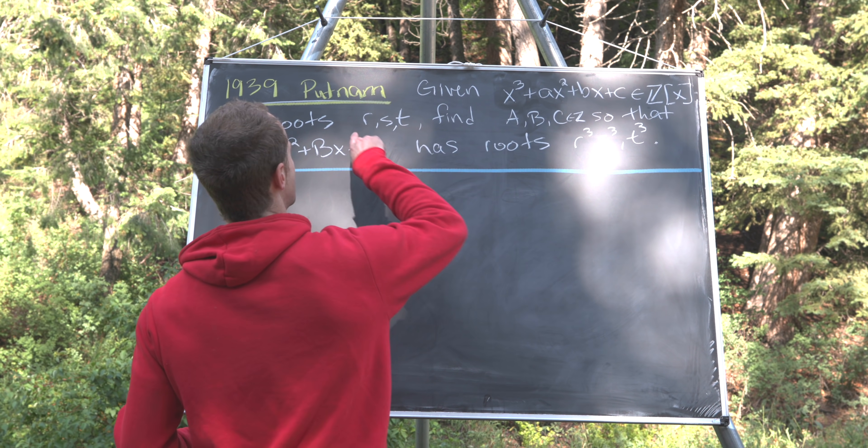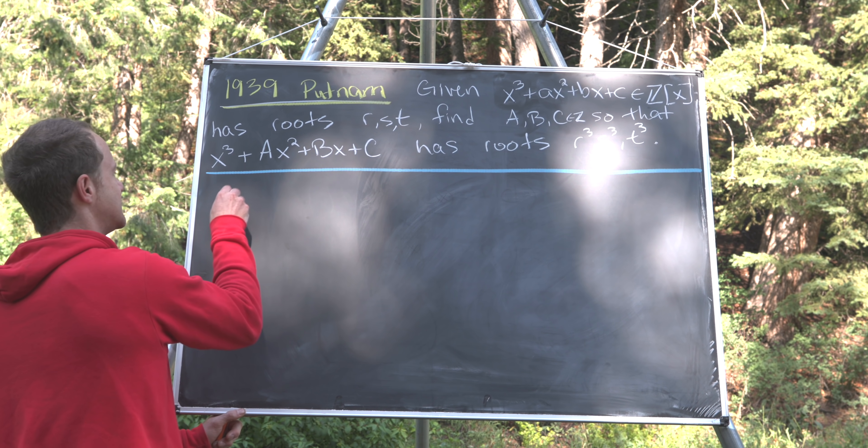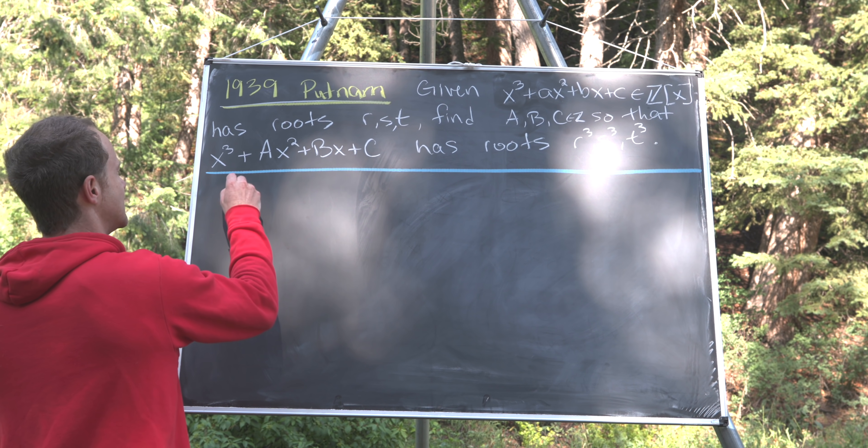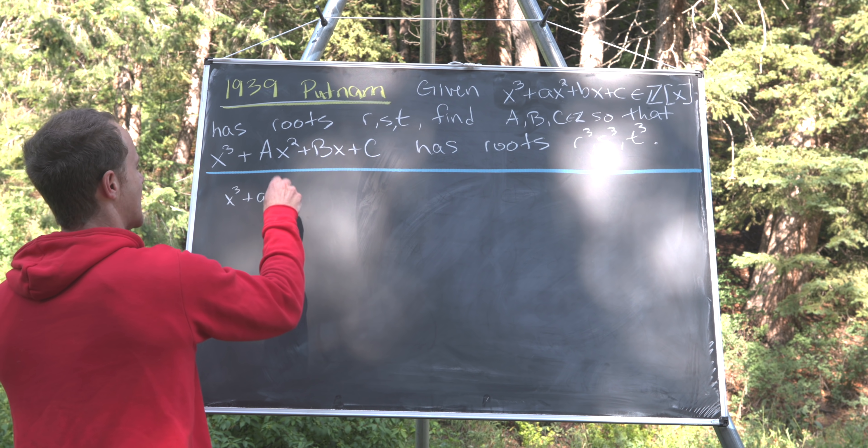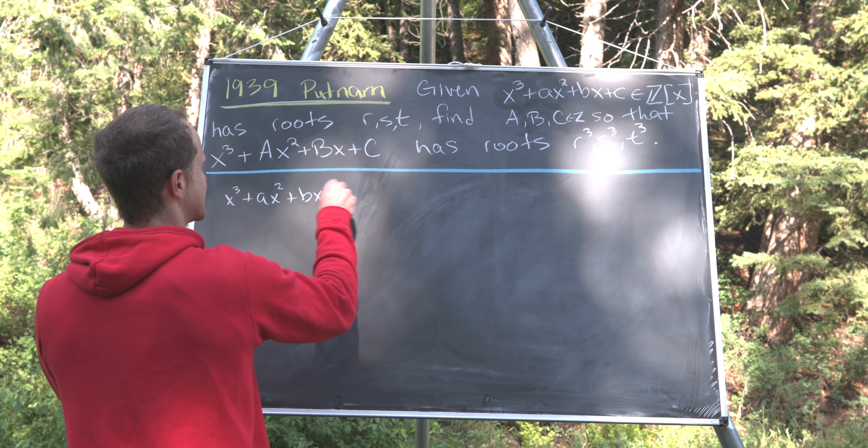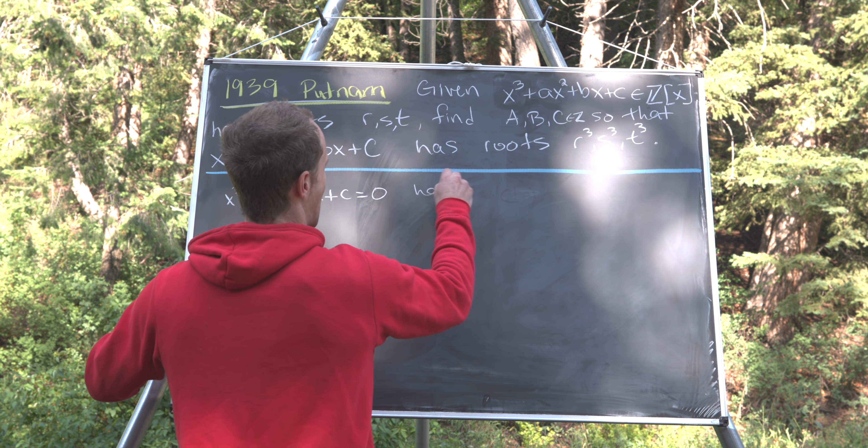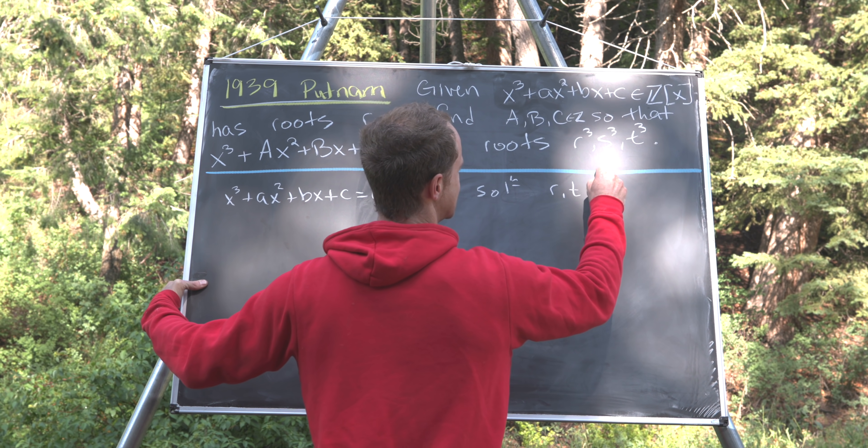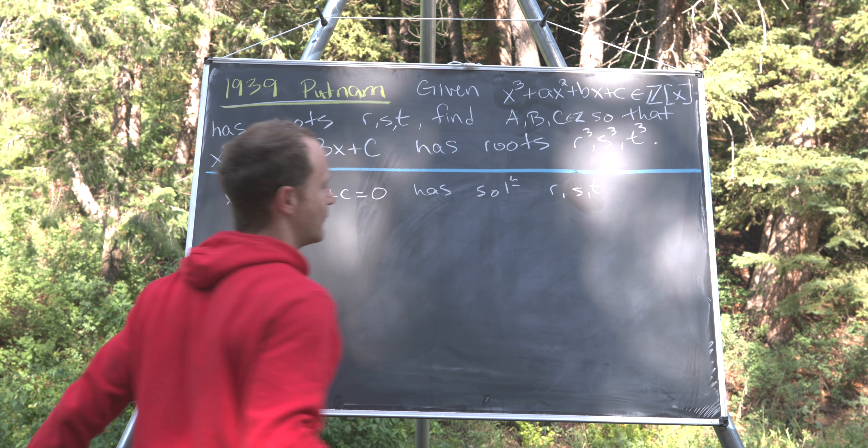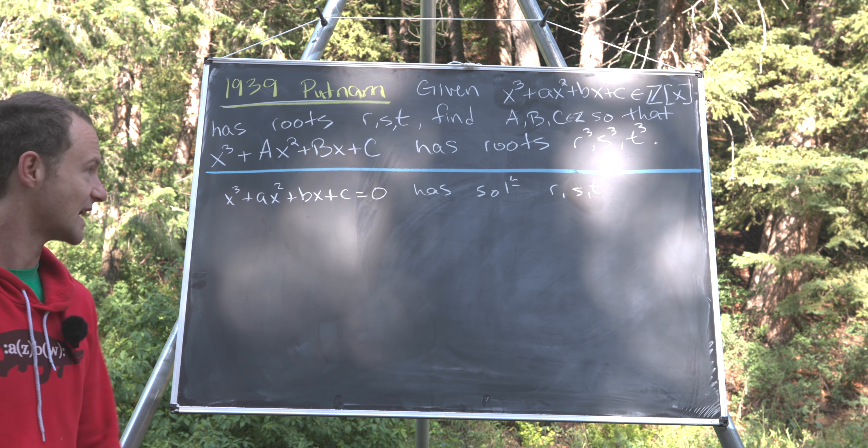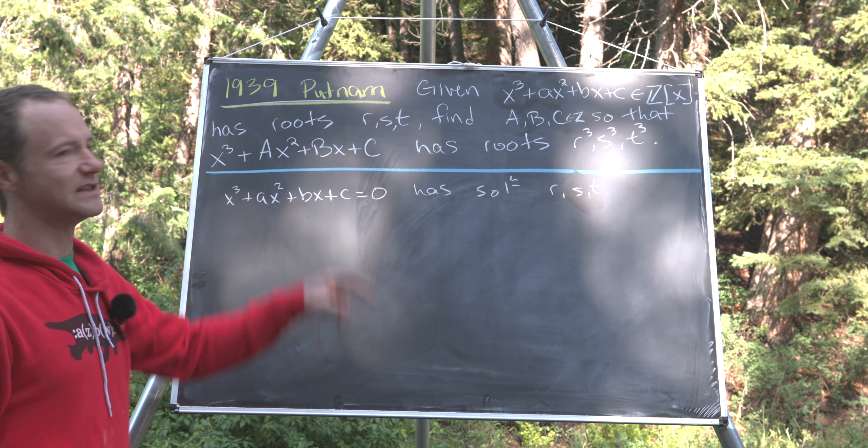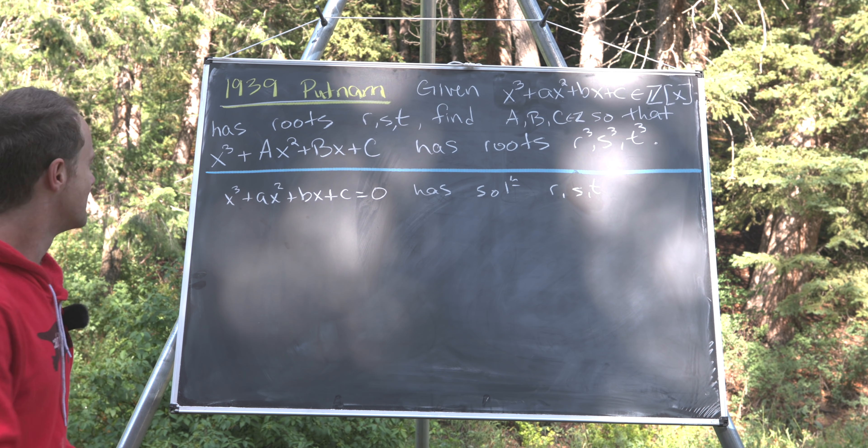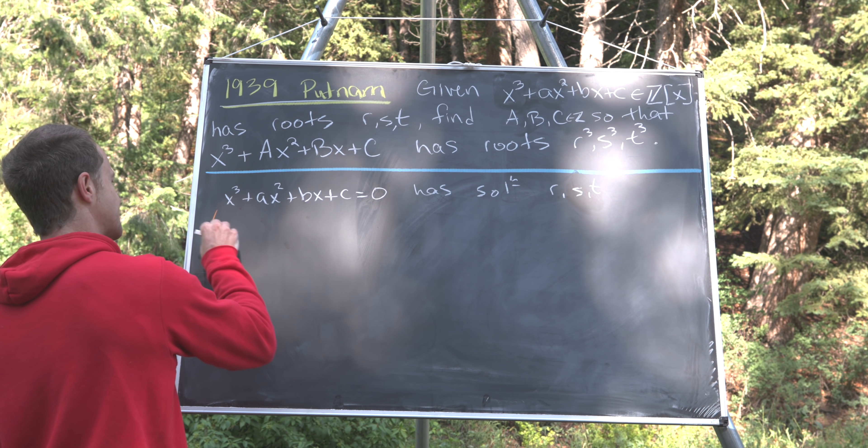So taking this with the fact that the roots are r, s, t, that tells us that this equation, x³ + ax² + bx + c = 0, has solutions given by r, s, t. And by solutions I mean if we plug x = r, x = s, or x = t into this, this equation is satisfied.